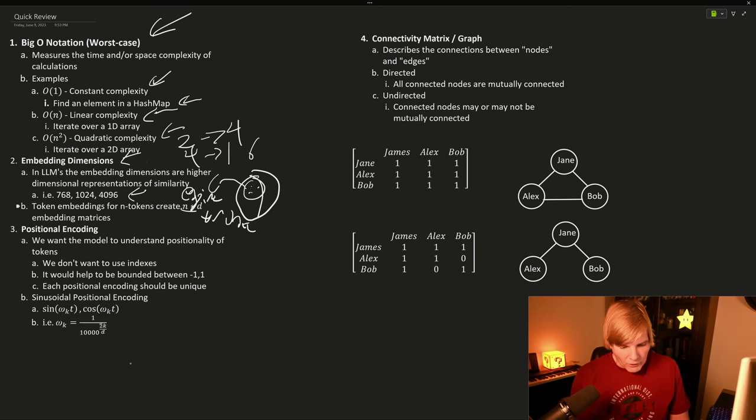Then we have positional encoding. And we do this because we want the model to understand positionality of tokens. And we don't want to have to use indices to do that because we don't want to carry around additional memory.